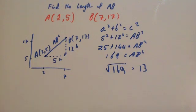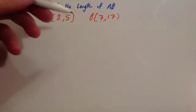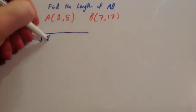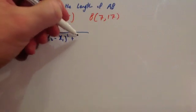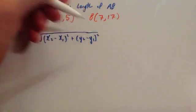Alternatively, we could use the formula, and I'm going to do it again now using the formula. So the formula for the length of the line, or the segment, is equal to the square root of x2 minus x1 squared plus y2 minus y1 squared.